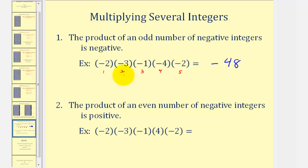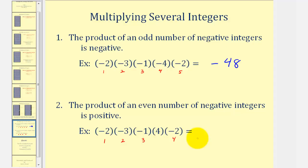This method is a bit faster than determining the sign for each individual product. The product of an even number of negatives is always positive. Here we have a product of four negatives, and therefore we know the product will be positive 48.